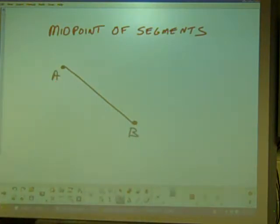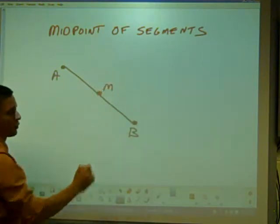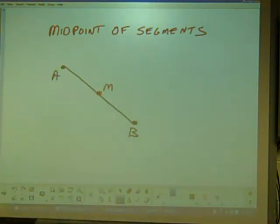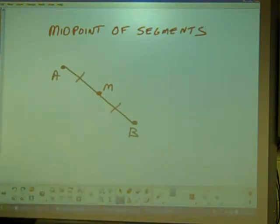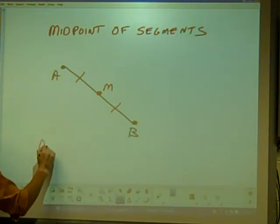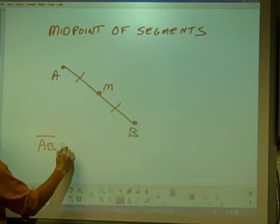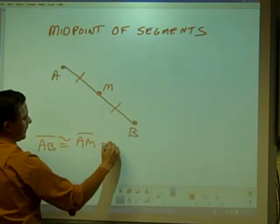If I want to find the midpoint M, we know it's right in the center, and I'll call it point M. When I find that point, that's an important point because it divides the segment into two equal portions - the middle point. So the overall length AB is congruent to AM and MB.